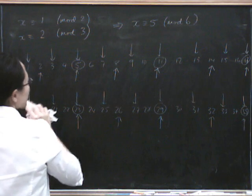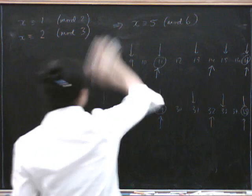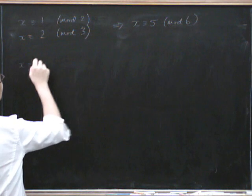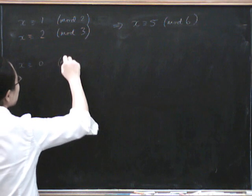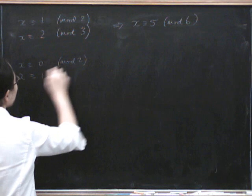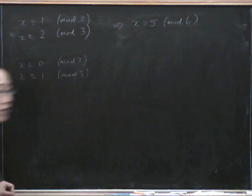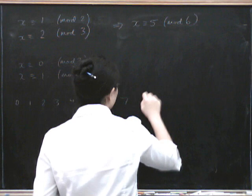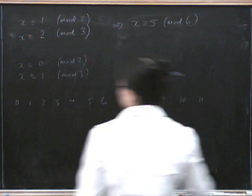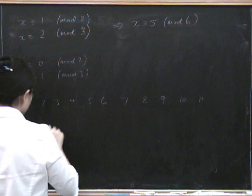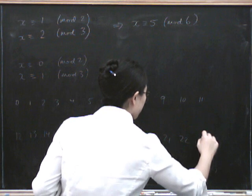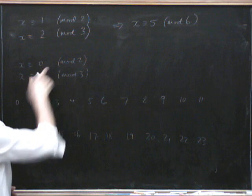Let's try doing x is congruent to 0 mod 2, and x is congruent to 1 mod 3. See if you can do this one as well. So: 0, 1, 2, 3, 4, 5, 6, 7, 8, 9, 10, 11, 12, 20, 21, 22, 23. I want to be 0 mod 2.